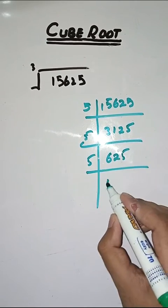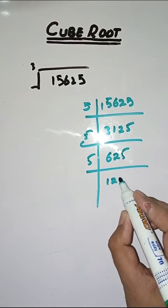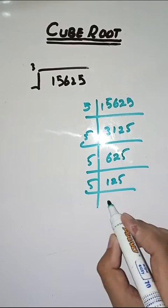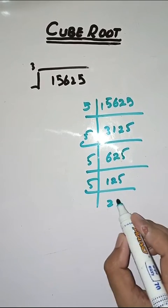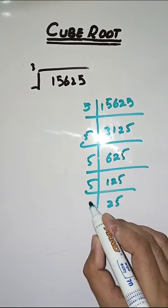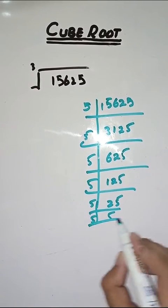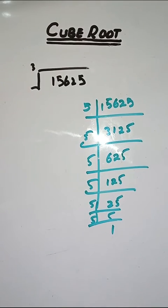5 ones are 5, 5 twos are 10, 5 fives are 25, 5 twos are 10, 5 fives are 25, 5 ones are 5.